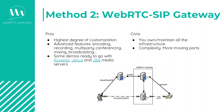So basically you would build a signaling server, add a media server in this WebRTC gateway, and at the other end you have the SIP user agent. This offers the highest degree of customization — you can have advanced features like encoding, recording, multi-party conferencing, mixing, and broadcasting. It's important to mention that Kamailio, Janus, and Jitsi are very famous open source media servers capable of acting as a WebRTC gateway as shown in this image.